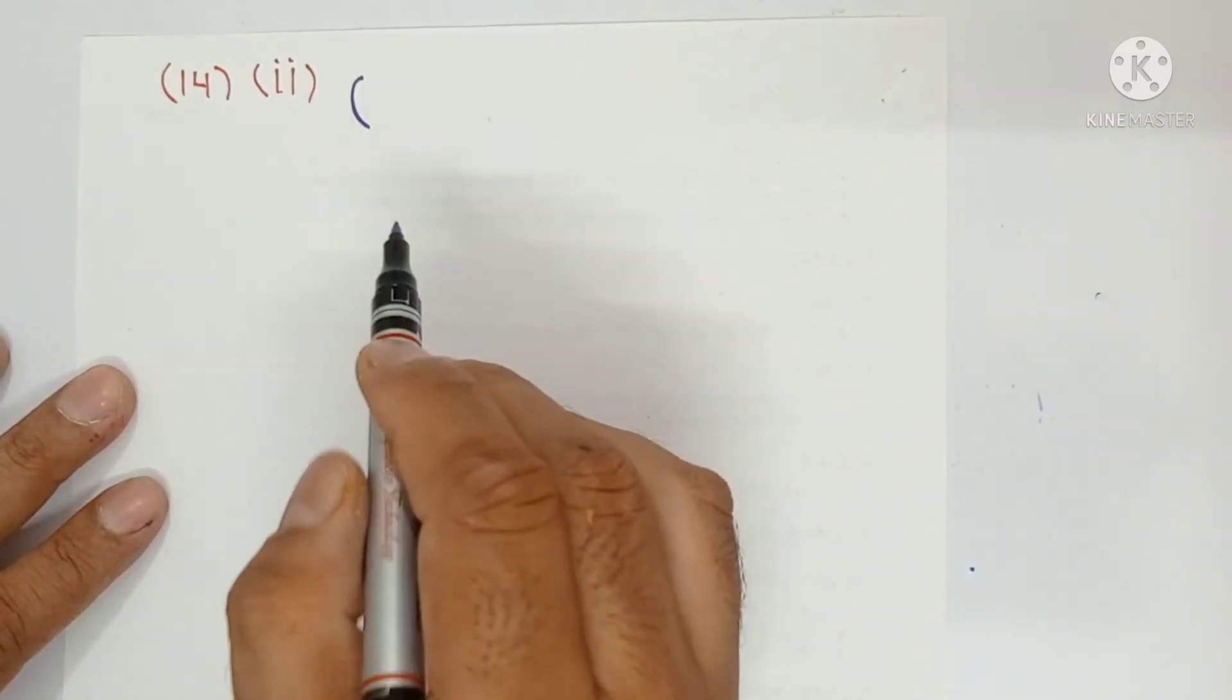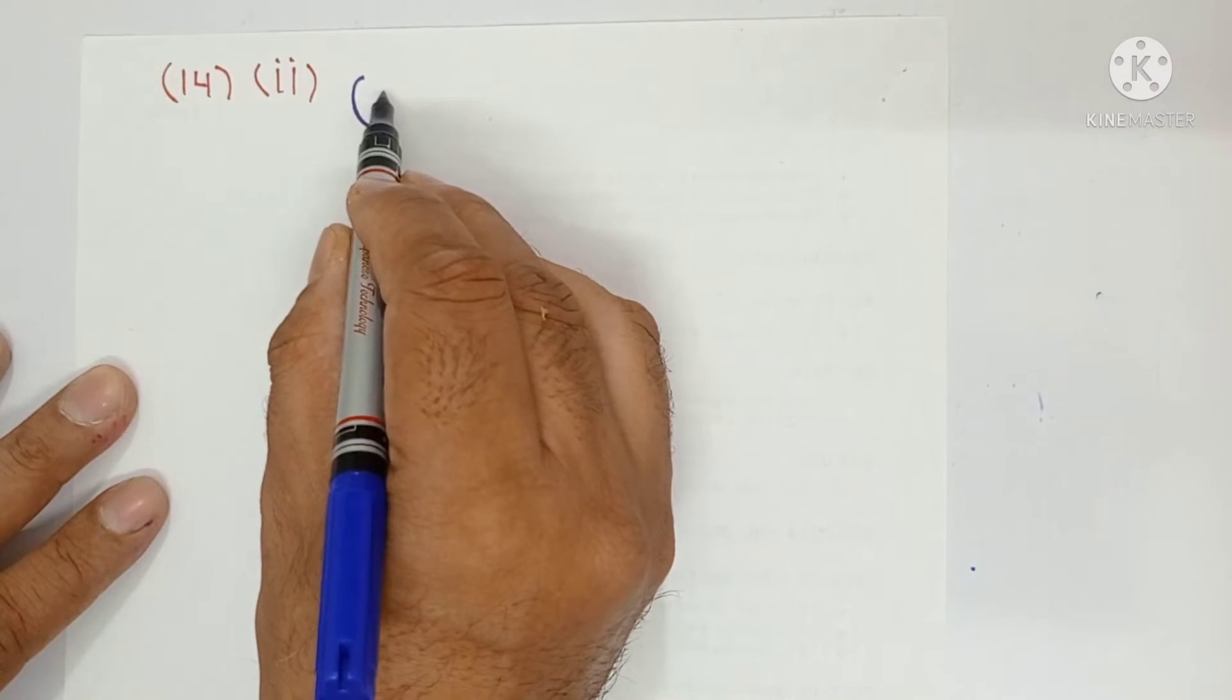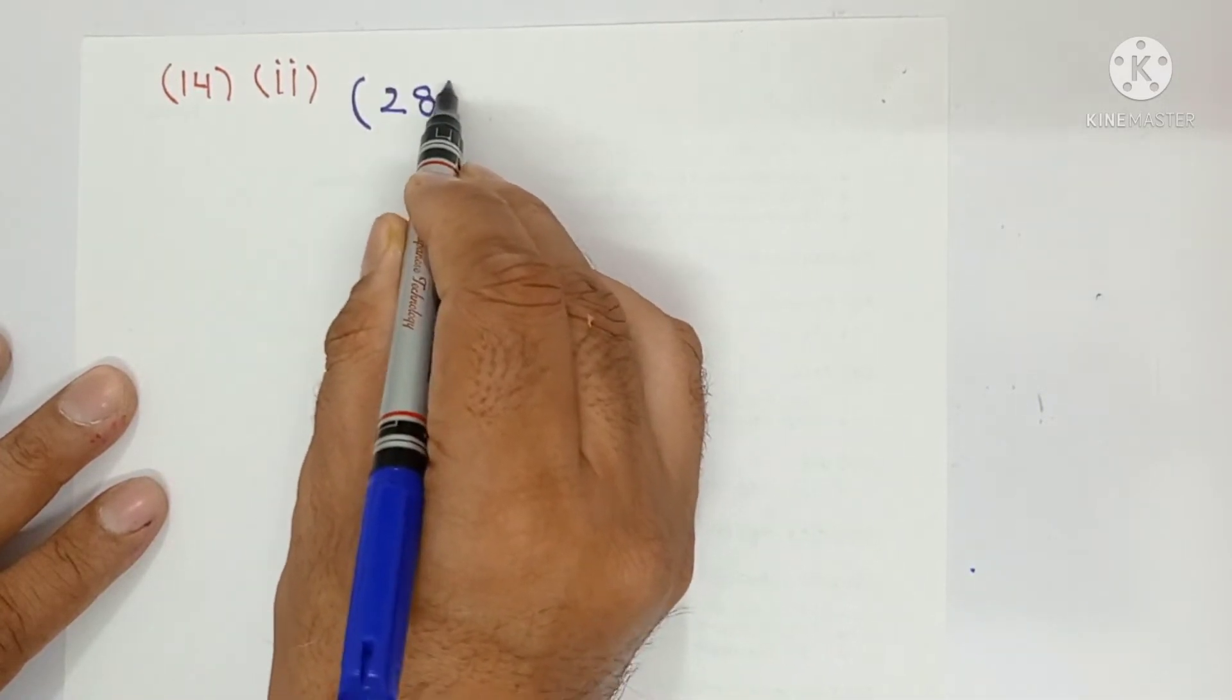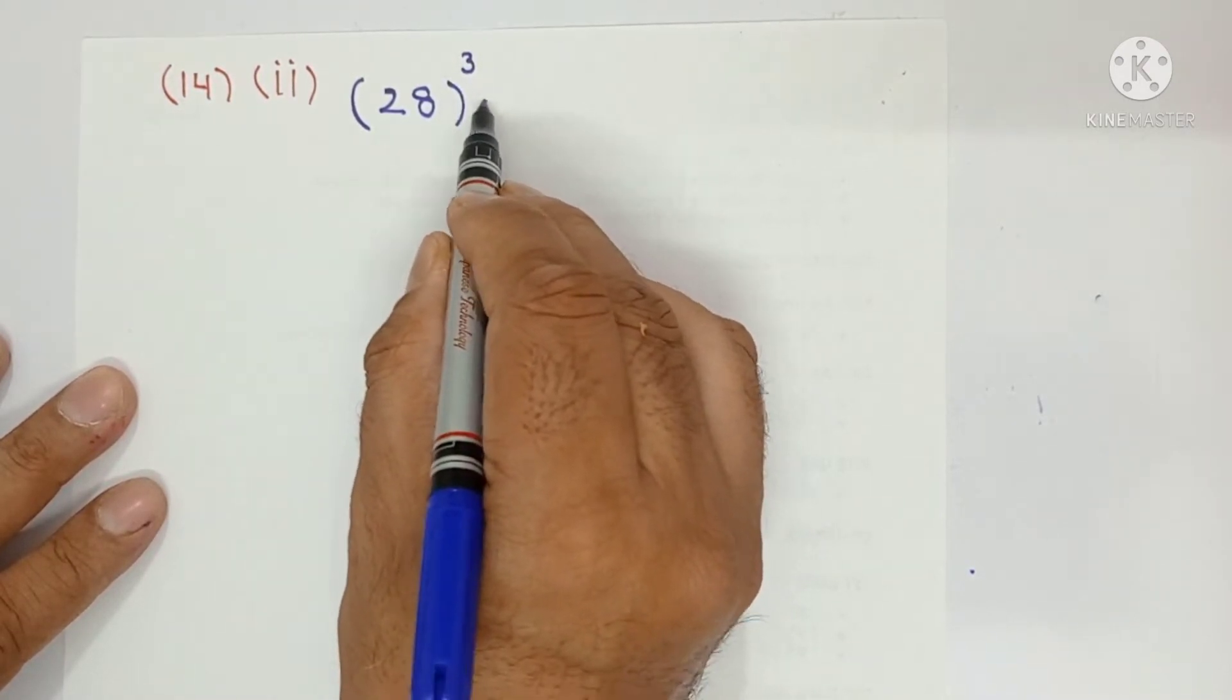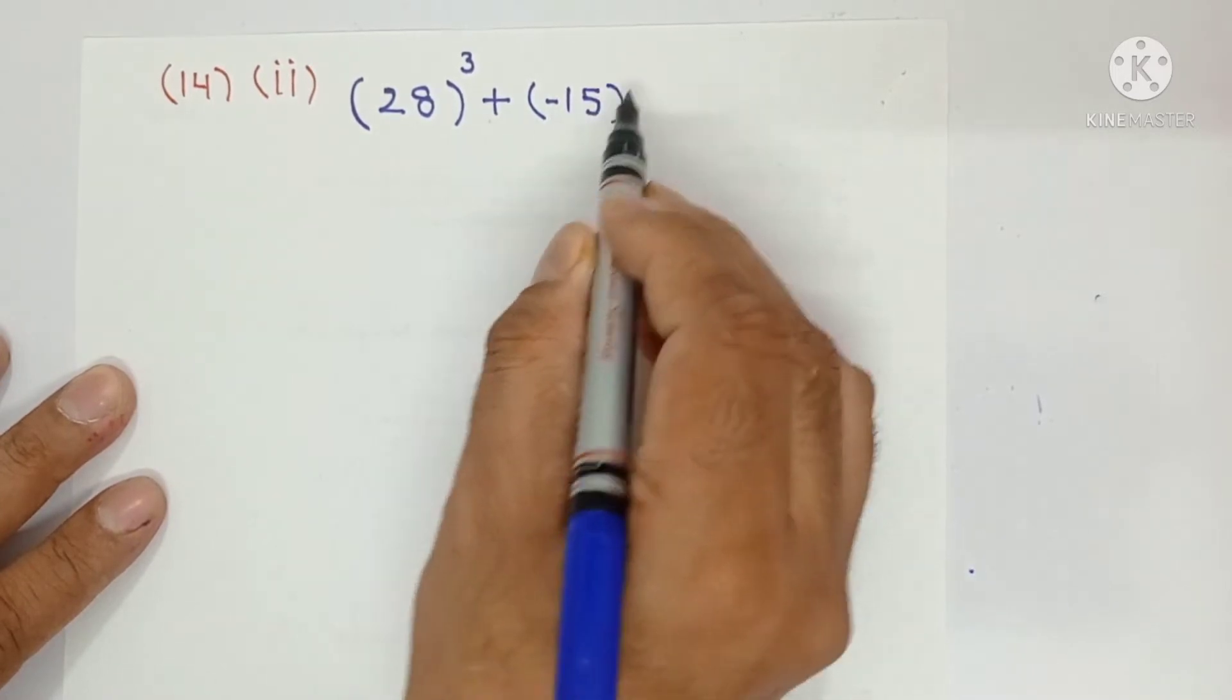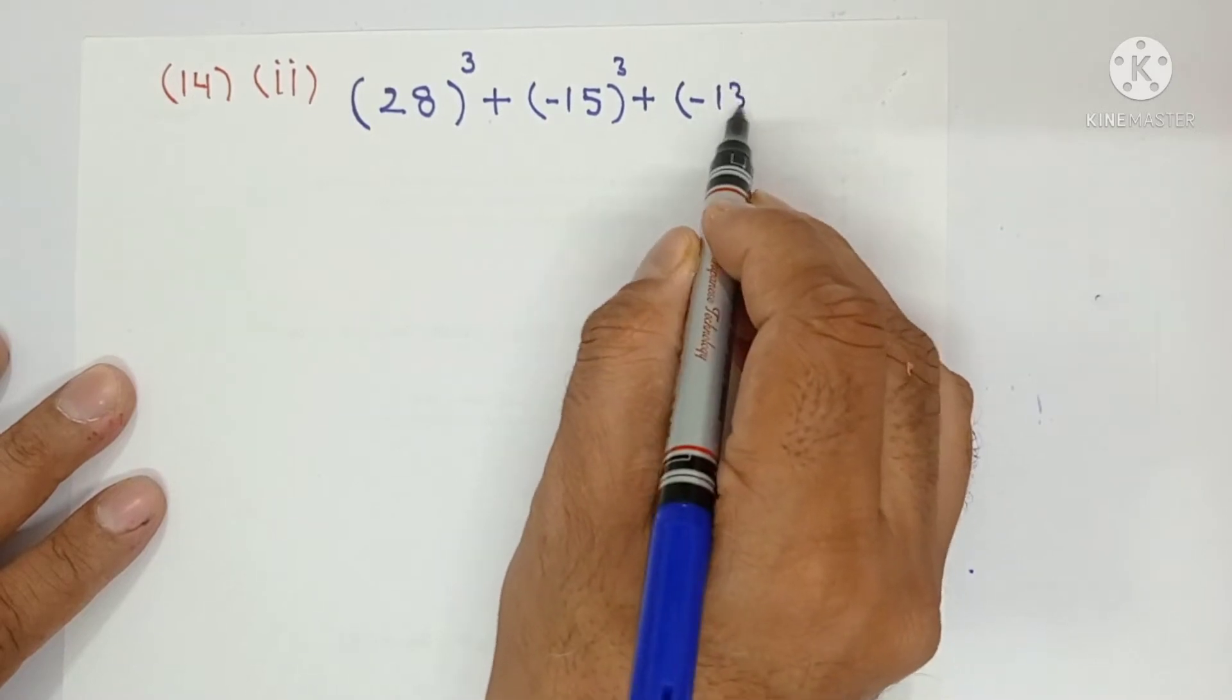Hello everyone, in this video I am doing question number 14 part second of chapter 2.5 polynomials. So without actually calculating the cubes, find the value of 28 whole cube plus minus 15 whole cube plus minus 13 whole cube.